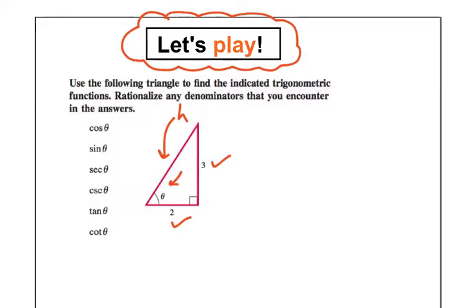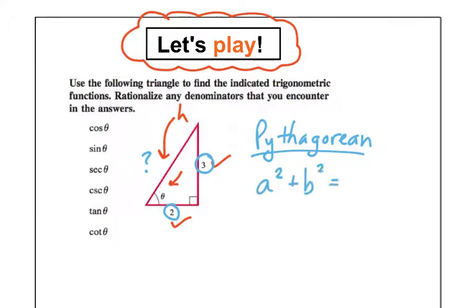Do you remember from geometry days? If you have two sides of a right triangle, how do you find the third side? It's coming back to you. There's our good old friend Pythagoras, Pythagorean theorem, which says that the sum of the squares of the two sides of a right triangle is equal to the square of the hypotenuse, where a squared plus b squared equals c squared. Remember that. Memorize that if you don't remember.